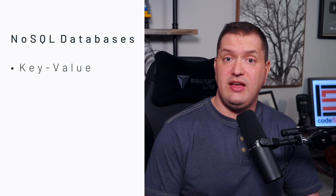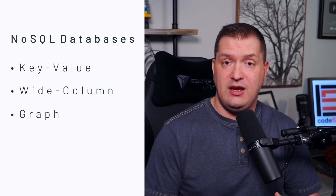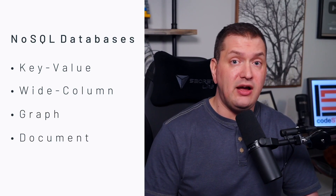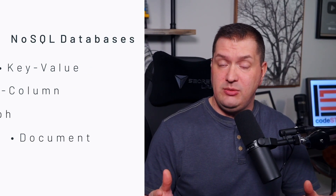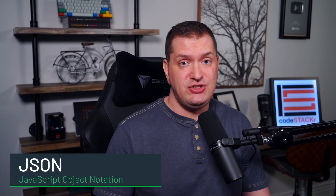There are several types of NoSQL databases: key-value databases, wide column stores, graph databases, and document databases. MongoDB is a document database. Instead of using tables, rows, and columns, document databases store data in documents. Specifically, JSON — JavaScript Object Notation — structured documents.